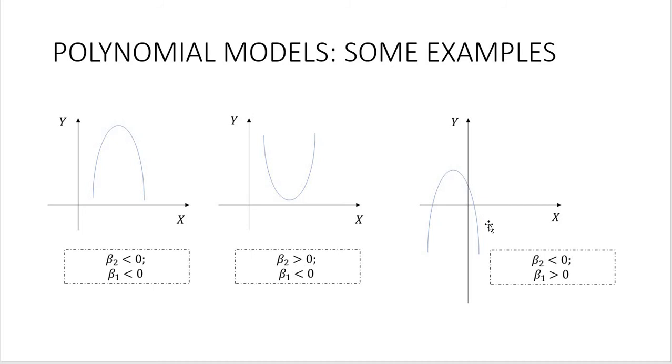Again, you do not specify the coefficients. However, if you know that according to the theory, your function should look like this, like both variables shall be negative, and then you obtain something like this, it might be a sign that you made a mistake in model specification.